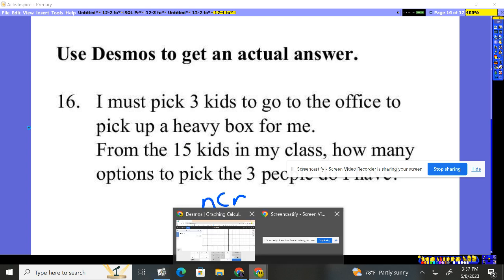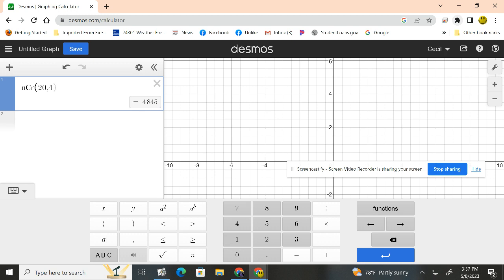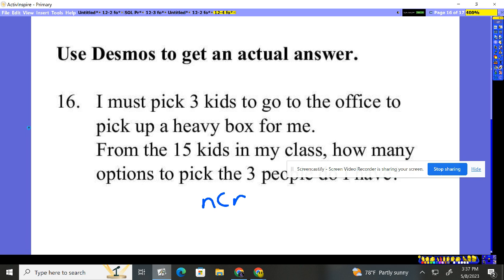So if we come back into Desmos, we can, in this case we already have the NCR pulled up. So we had how many kids to pick from? I had 15 kids and I picked three. So 15 comma 3. It says, hey, there's 455 ways you could send those guys down to the office. So this is 455 different ways to send them down to the office.